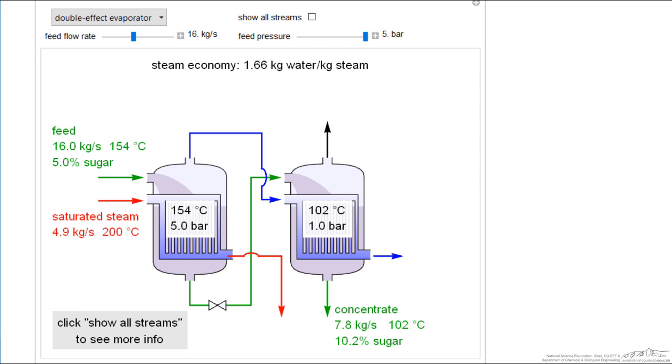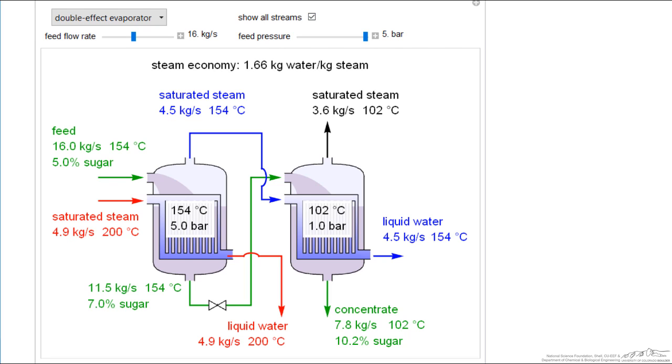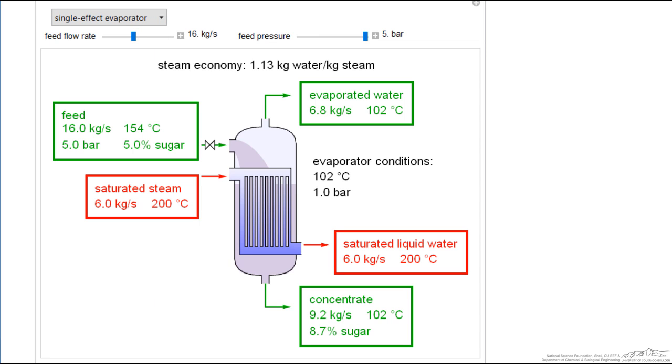This simulation also has a double effect evaporator. In this case, we can label the streams by clicking show all streams, and then the single effect evaporator.